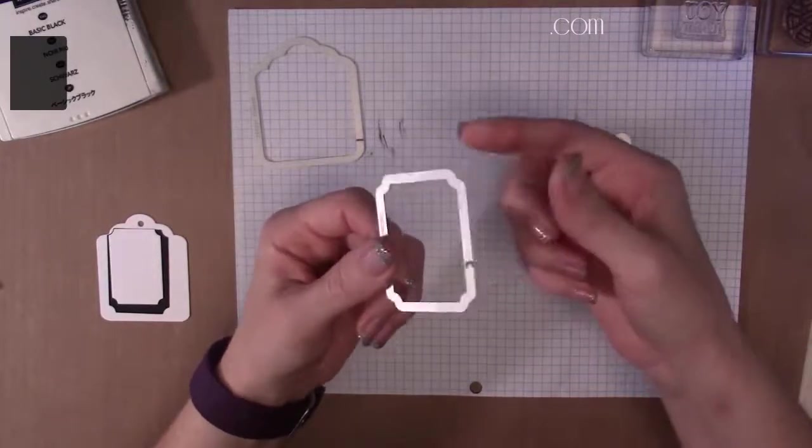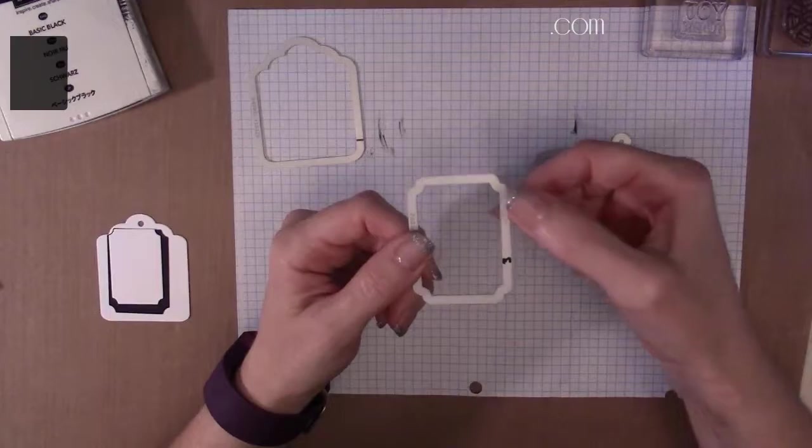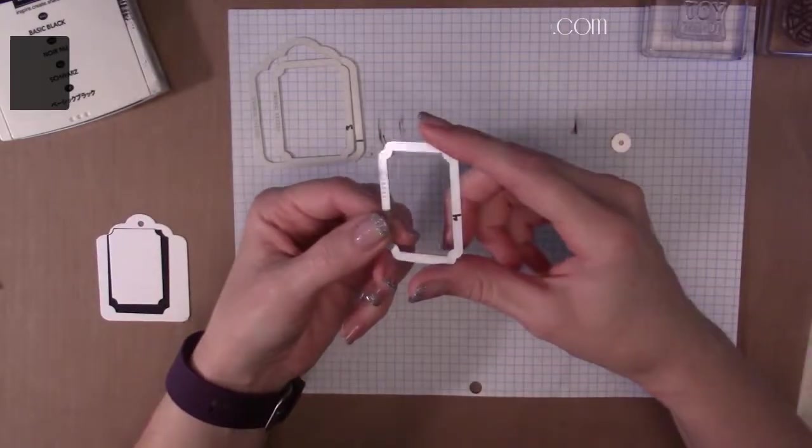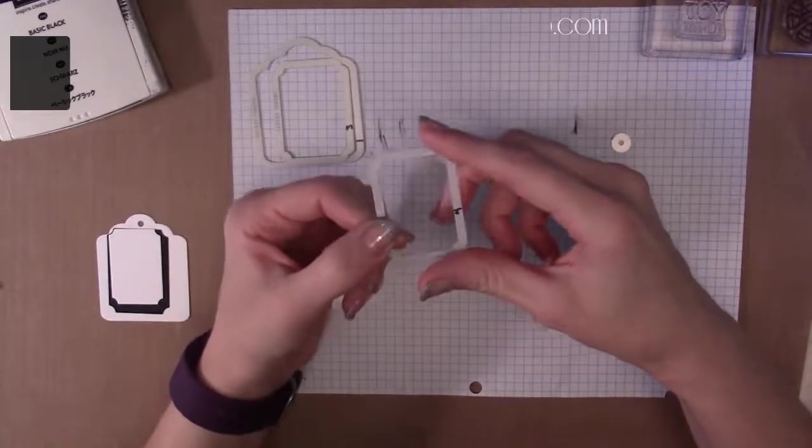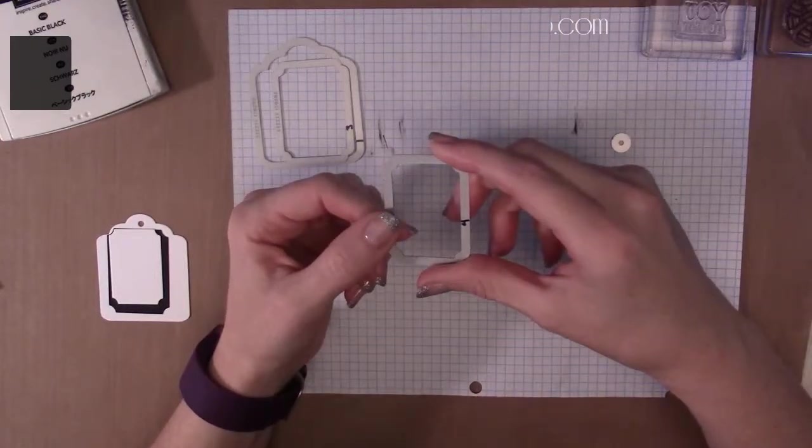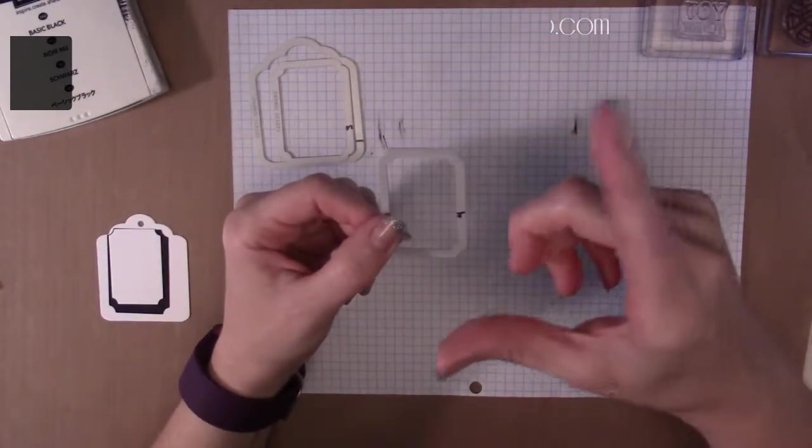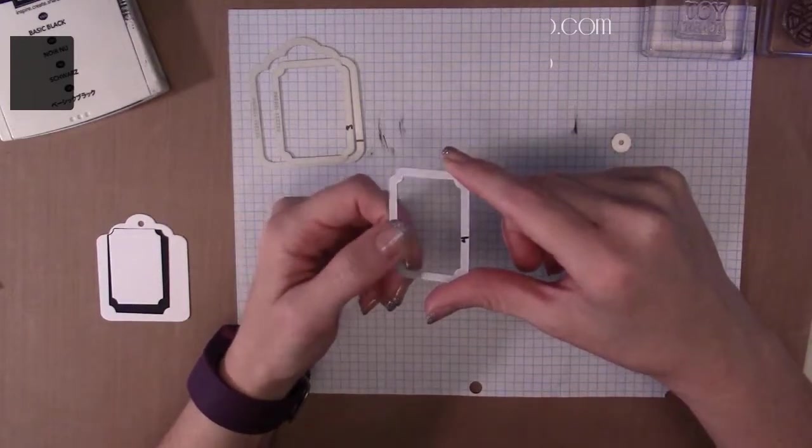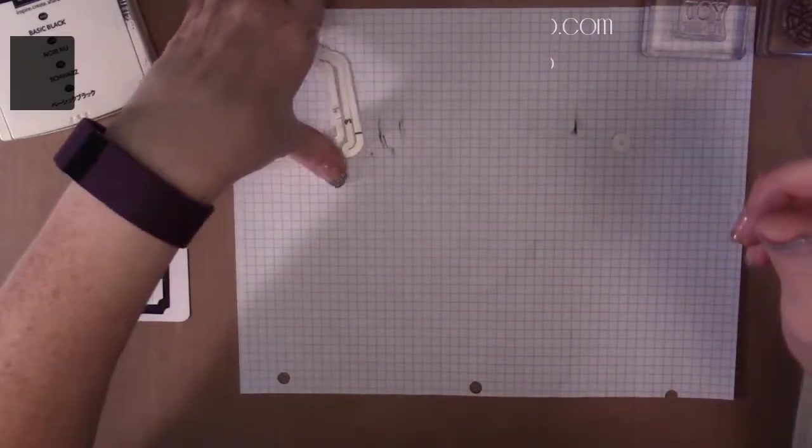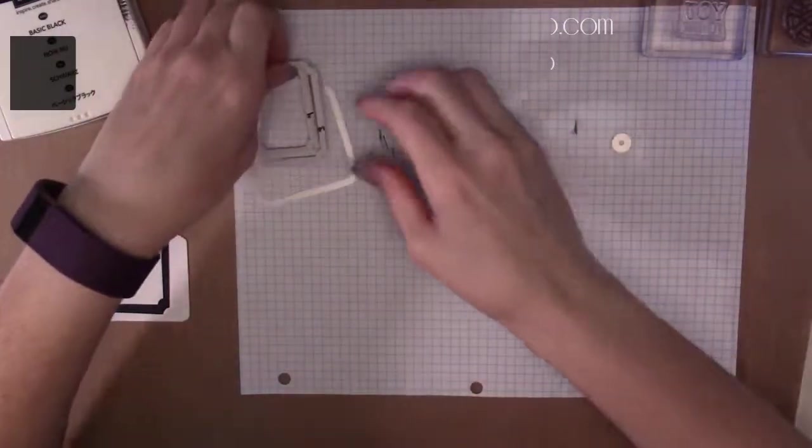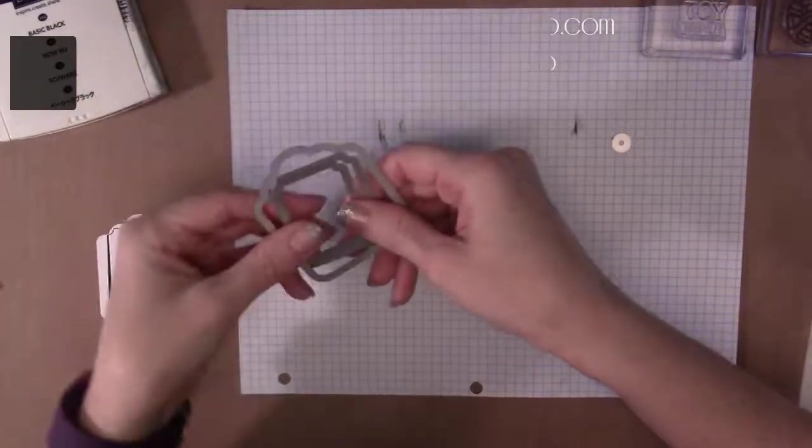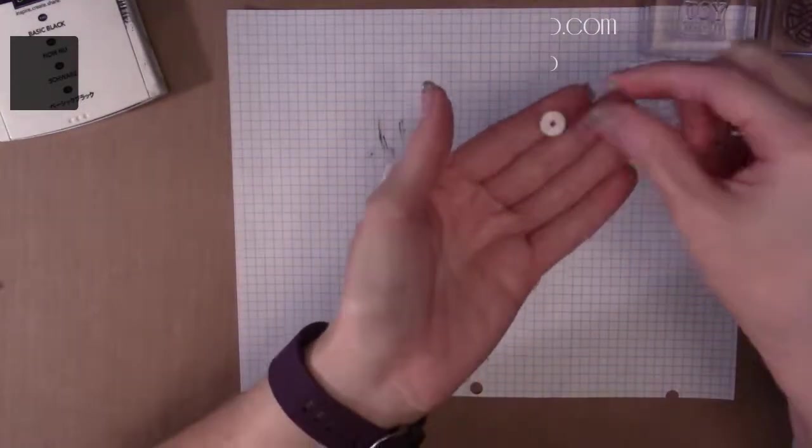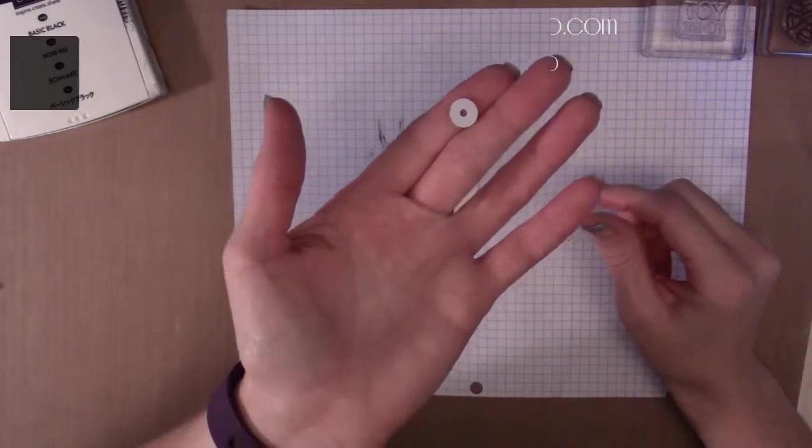Select the middle size of the labels, this one is one and fifteen sixteenths by one and three eighths. Then you're going to need the next size down, which I've labeled number four, one being the biggest, six being the smallest. So number four measures one and eleven sixteenths by one and three sixteenths. I don't know who ended up measuring those for all of us, but I thank them greatly because that's a lot to measure.